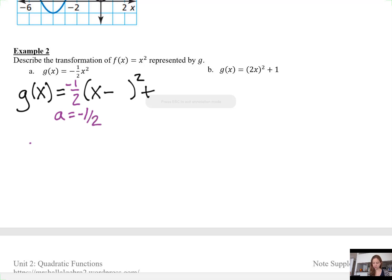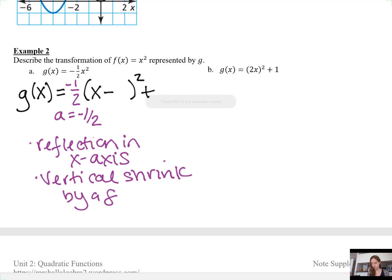The negative means that there has been a reflection in the x-axis, and the 1/2 means there has also been a vertical shrink by a factor of 1/2. We have 0 and we have 0. I'm not going to talk about the 0h or the 0k. That did not impact the transformation at all.